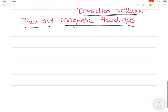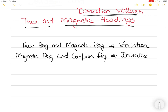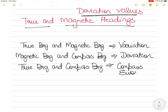So how do you practically apply this? Remember these relationships: true bearing and magnetic bearing have a relationship with variation. Magnetic bearing and compass bearing — the one we actually get on the ship — have a relationship with deviation. And true bearing and compass bearing have a relationship with the combination of variation and deviation, which we call compass error.